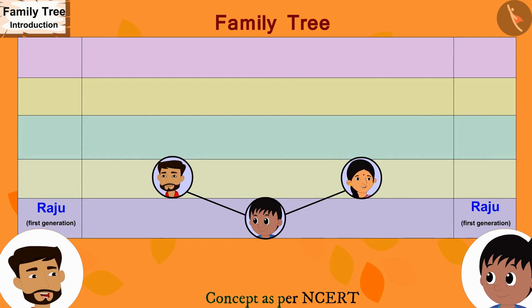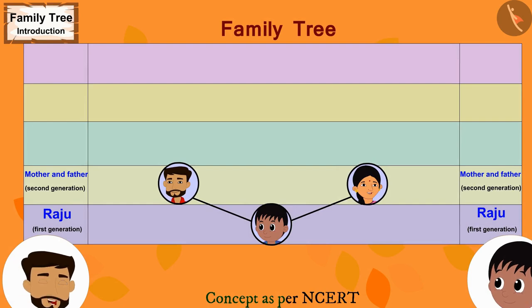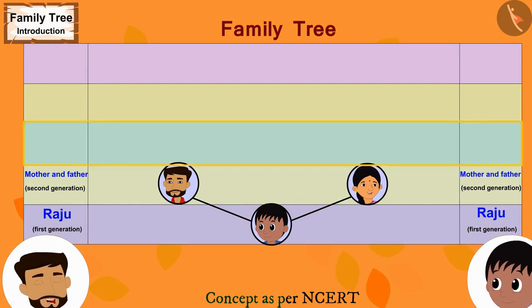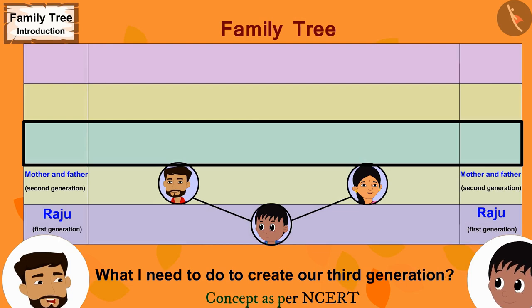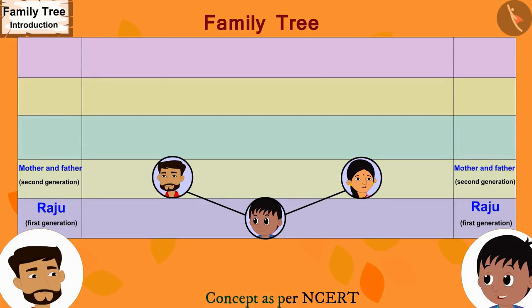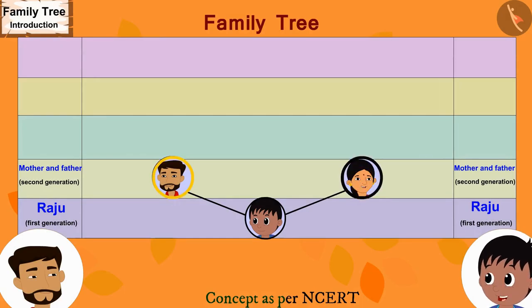Father explains that he and Raju's mother are both in the second generation of this family. He then asks Raju if he can tell what needs to be done to create the third generation. Raju correctly answers that you have to draw two lines each above father's and mother's names.